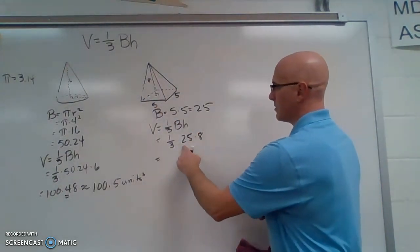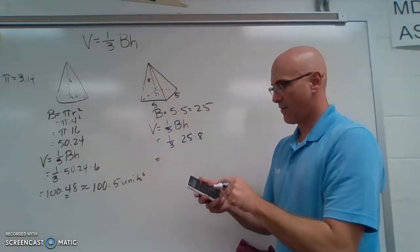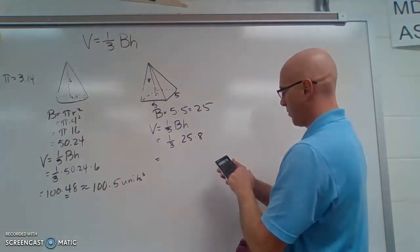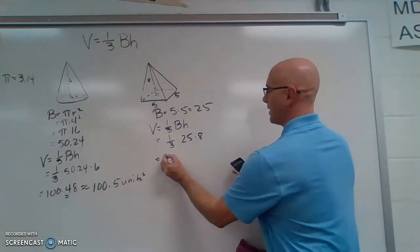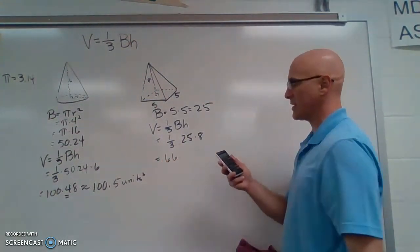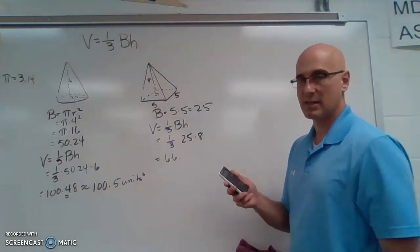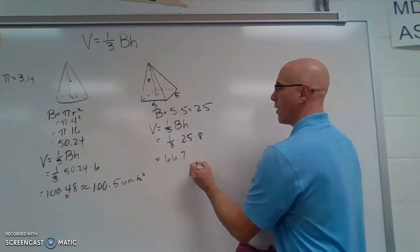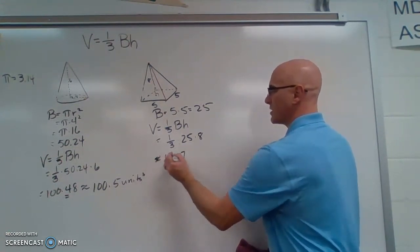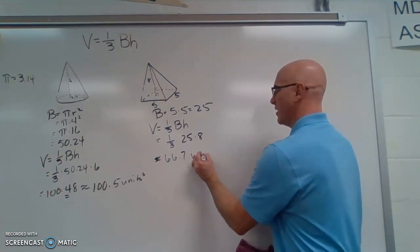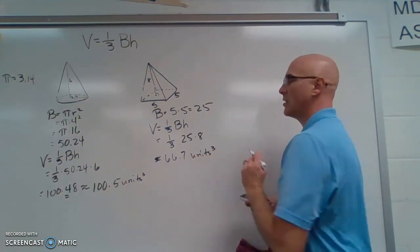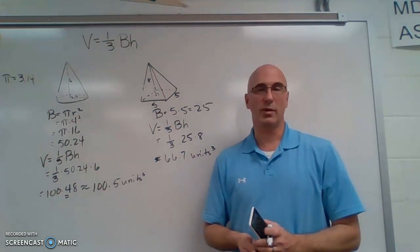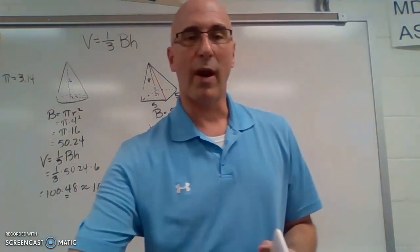Easiest way to do that is multiply these two together. 25 times eight, which is 200 divided by three. That is 66.666... So what we will do is we will round that up to 66.7 cubic units. And that is how you find the volume of a pyramid and a cone. Now go practice.